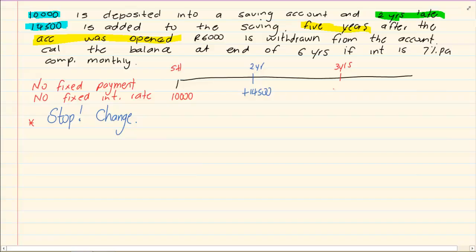So 5 years after the account was opened, you took out 6,000 Rand. You withdrew it. Which means you removed 6,000 Rand. Now what they want us to do is calculate the balance at the end of 6 years. So we have, we started in the beginning, we have 2 years, then we have another 3 years which gives us 5 years. Then we have one more year which will give us our 6 years.